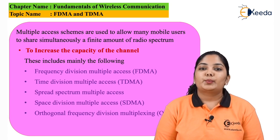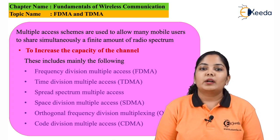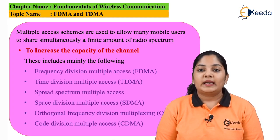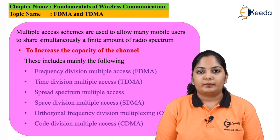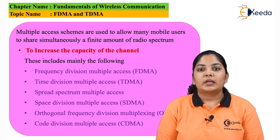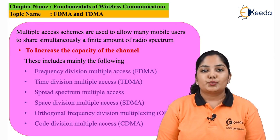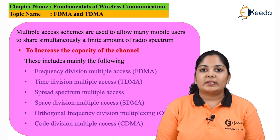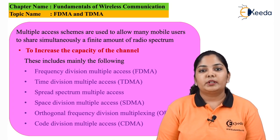FDMA stands for frequency division multiple access. Here, every user is given a part of the frequency spectrum. Every other user is given some other part of the frequency spectrum — meaning small frequency bands are given to multiple users. The advantage is that we can accommodate many users in a single spectrum, and each user is allocated a unique frequency band so there is no interference between users.